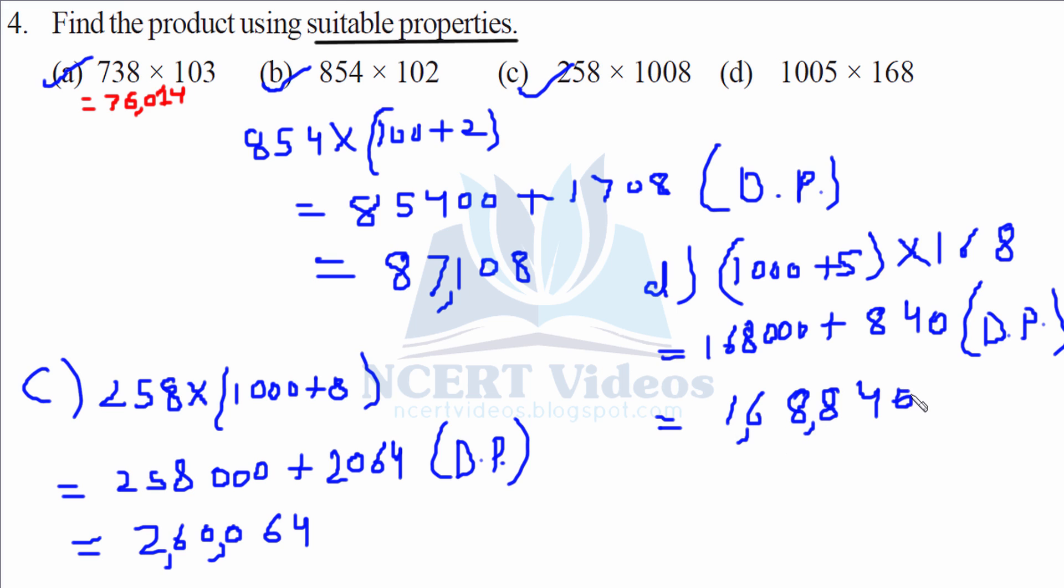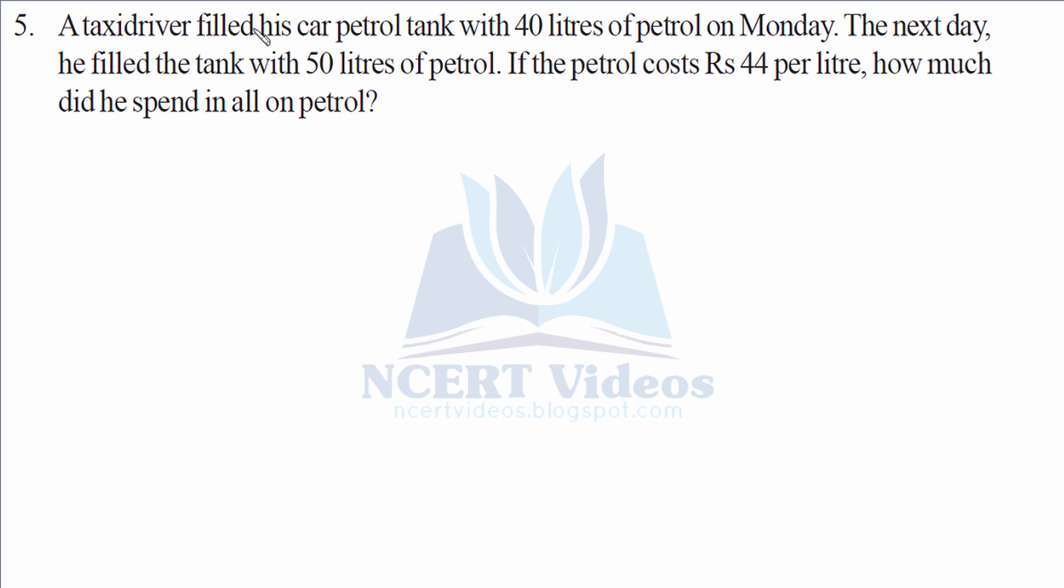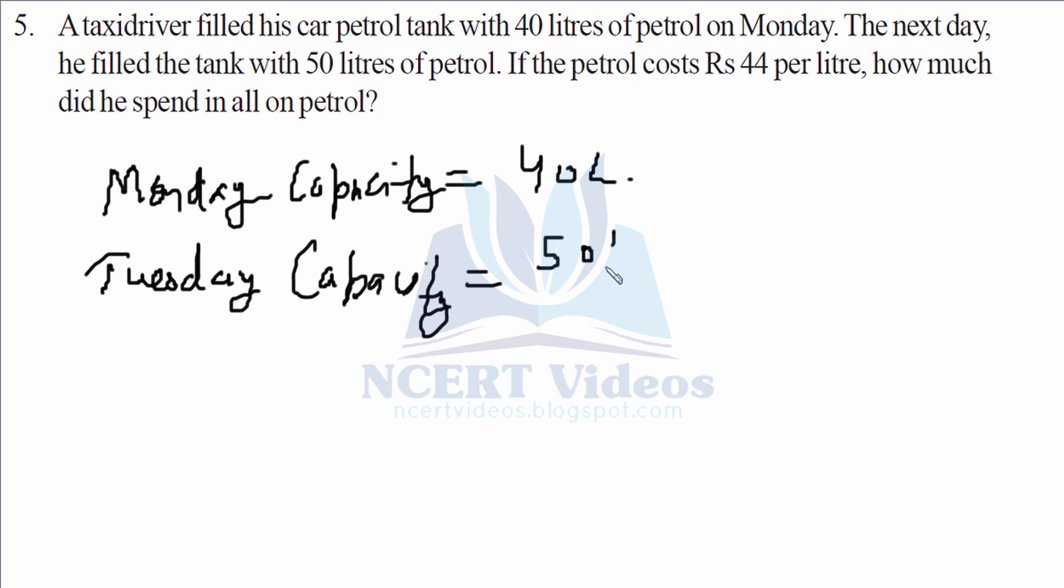Question number 4. A taxi driver filled his car petrol tank with 40 liters of petrol on Monday. The next day he filled the tank with 50 liters of petrol. If the cost of the petrol is Rs 44 per liter, how much did he spend in all on petrol? It's an easy question. Monday capacity, he filled 40 liters. The next day is obviously Tuesday, if the days are consecutive. Tuesday capacity is 50 liters. So just add first of all, total capacity he filled in both the days is 40 plus 50 gives you 90 liters.